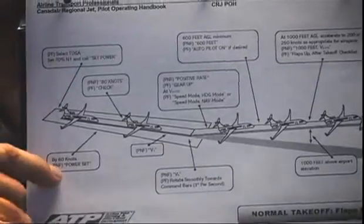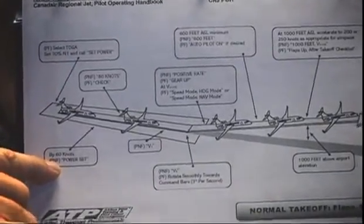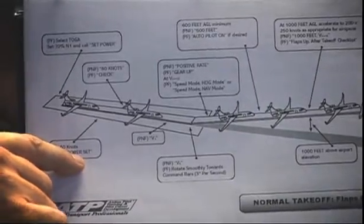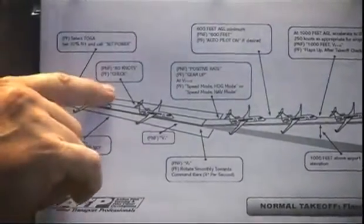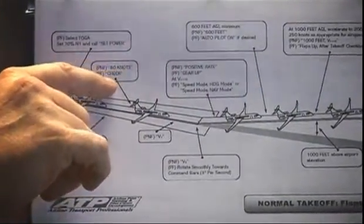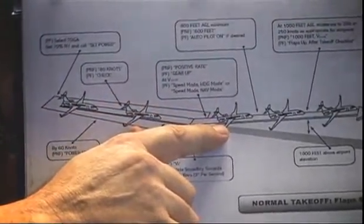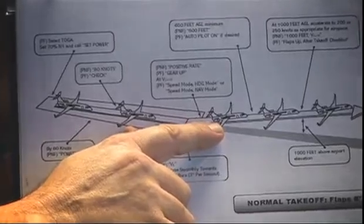The pilot not flying has up to 60 knots to reply 'power is set.' Then the pilot not flying says '80 knots,' pilot flying says 'check,' then V1, VR, positive rate, gear up, speed mode, heading mode, and on and on through the takeoff roll and takeoff.